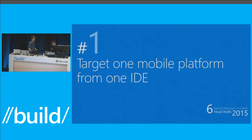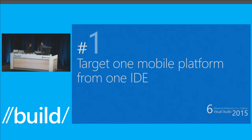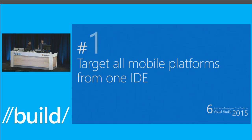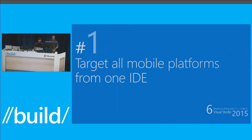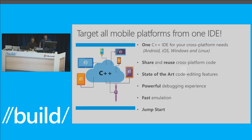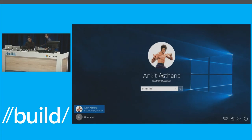Moving to reason number one: target all mobile platforms from one IDE. How many people knew you can target Android, iOS, Windows, and Linux from Visual Studio? Not many — so we're going to fix that today. Under File > New Project > Cross Platform, you have templates for Android and iOS. What I have on screen is the MoreTeapots sample from the Android NDK, which has both Java and C++ code. Opening a Java source file, I can see squiggles — hovering over them shows that this particular package import is not being used. We have Java IntelliSense to help you here. As I create a usage of this API, Java IntelliSense pops up, including inside Android context and lifecycle methods like 'onCreate'.